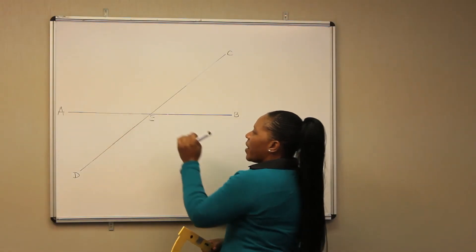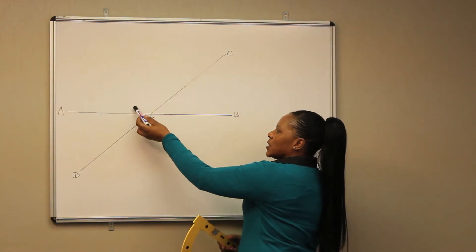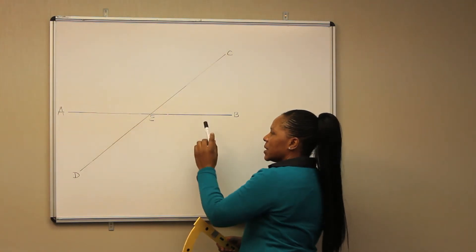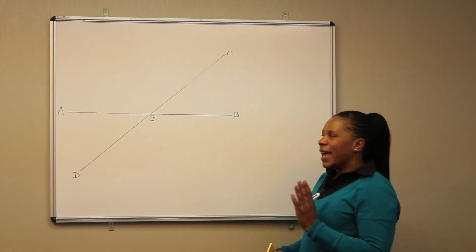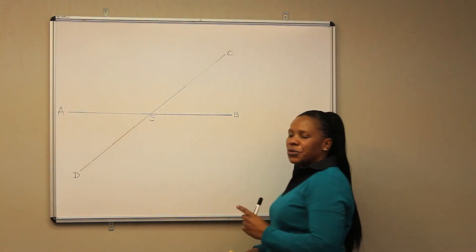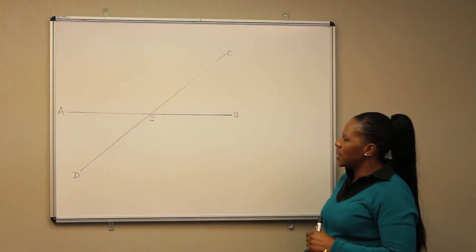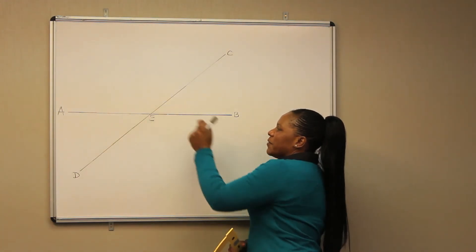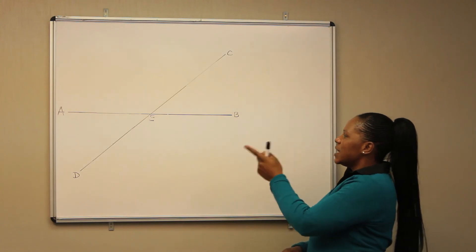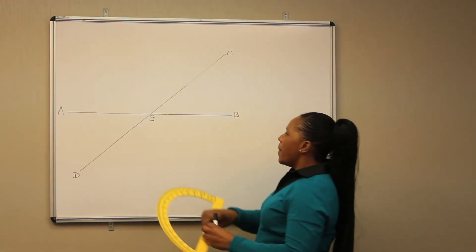To verify that our answer here is correct, 140 degrees, we should also measure this angle. We know that angles on a straight line, they should add up to 180 degrees. So if we are correct here, we should have 40 degrees on angle CEB. Let's measure that angle.